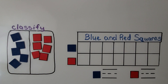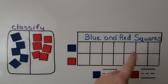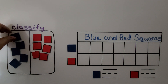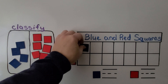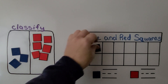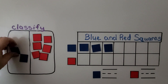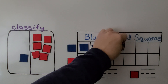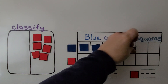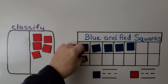Now we can move the squares to the graph — blue in this row and red in this row. We can put all the blue ones, one square in each box, and all the red ones in this row.